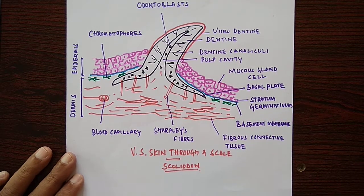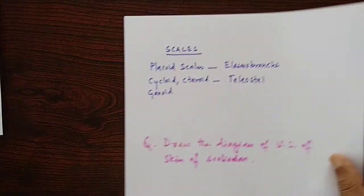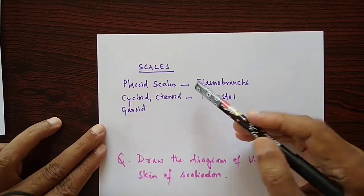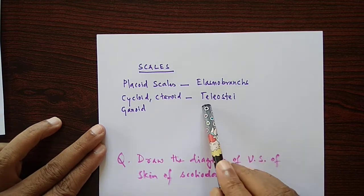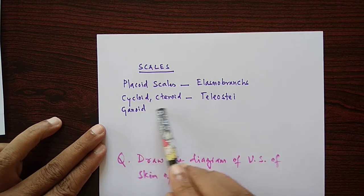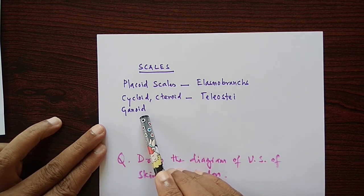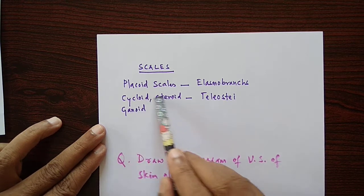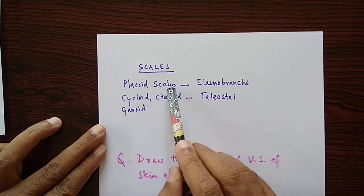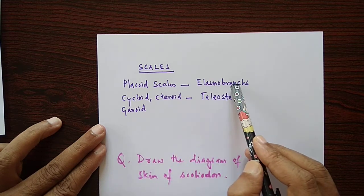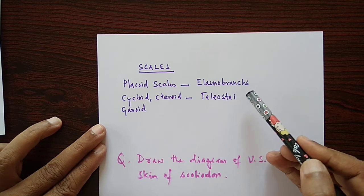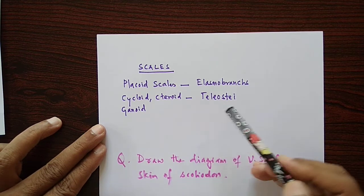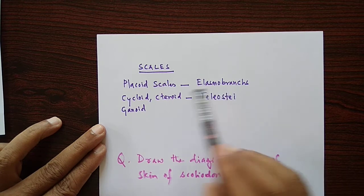The difference lies in the scales. Placoid scales are present only in elasmobranchs, whereas in teleosts (bony fishes), cycloid, ctenoid, and ganoid scales are present. Elasmobranchs exist only in salt water (marine water), whereas teleosts can occur in both marine water and fresh water.